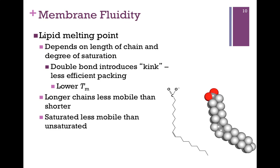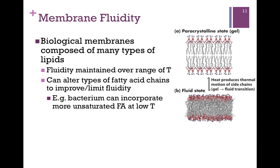With regard to unsaturated fatty acids, a double bond introduces a kink in the chain, which you can see clearly in the space-filling model on the right. They can't pack together as well, and that lowers the melting temperature. So longer chains are less mobile than shorter ones because of more van der Waals interactions, and saturated chains are less mobile than unsaturated ones because of tighter packing — more ordered in saturated chains, less ordered in unsaturated.